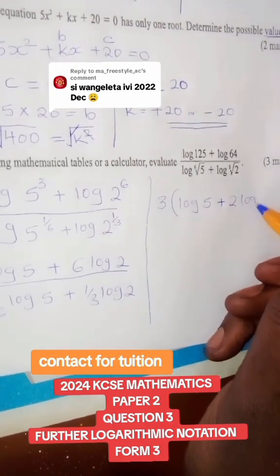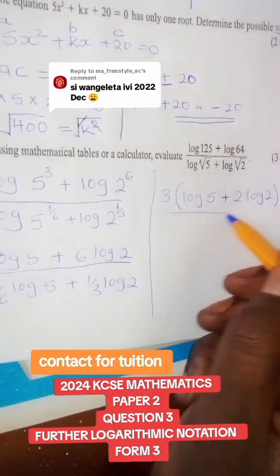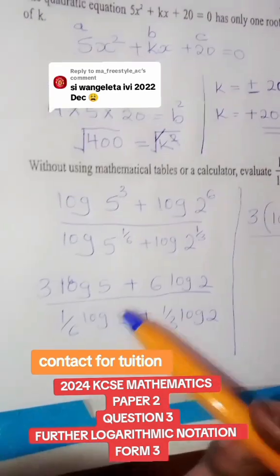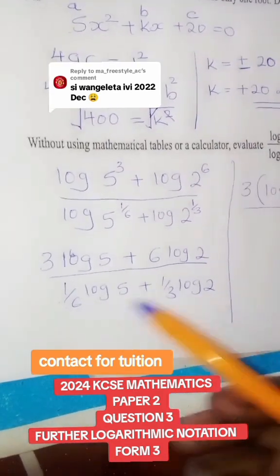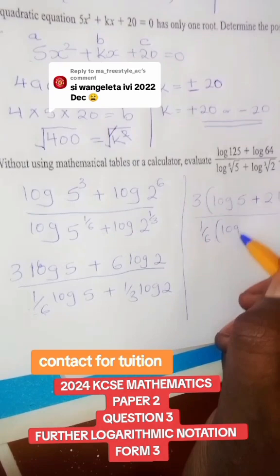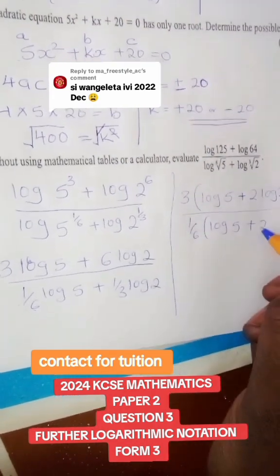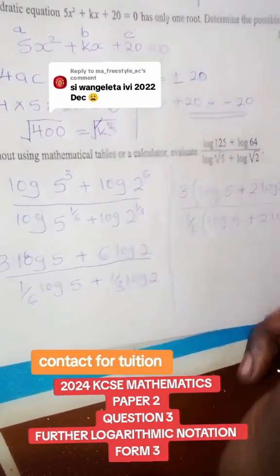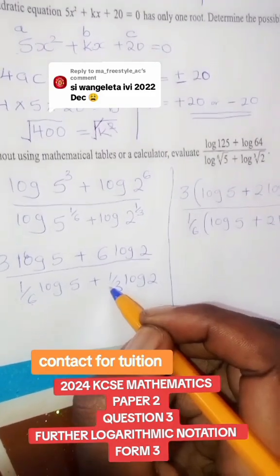over on the denominator. The number that can divide both of these is a 6th. Therefore, a 6th will go here, log 5, and here it will be 2 times. Because 2 times a 6th will give me a 3rd.